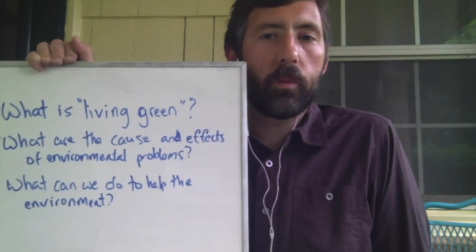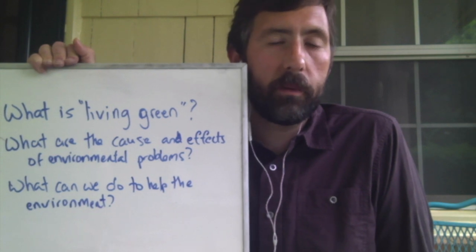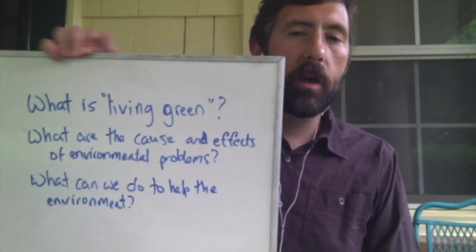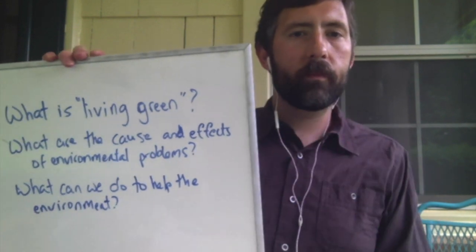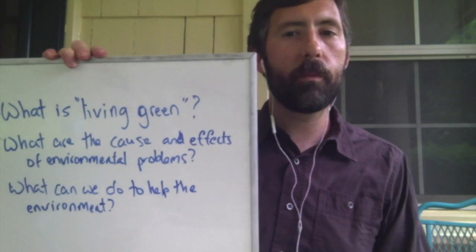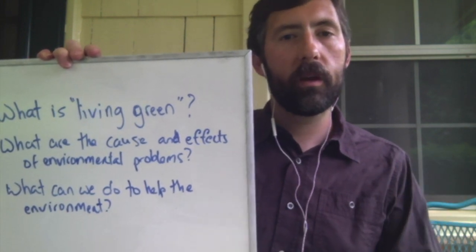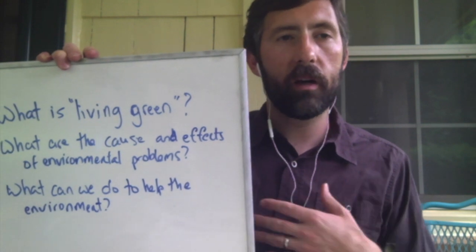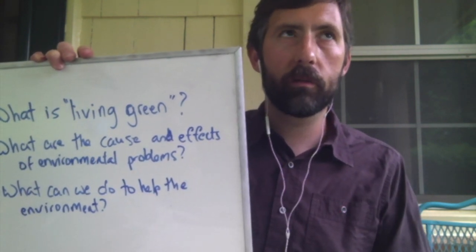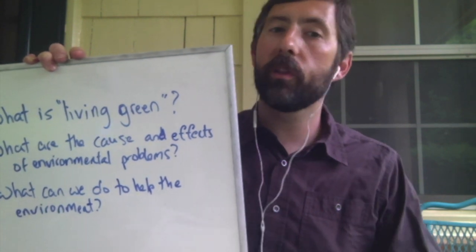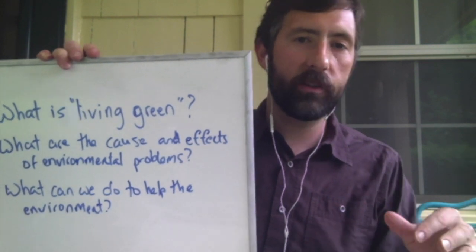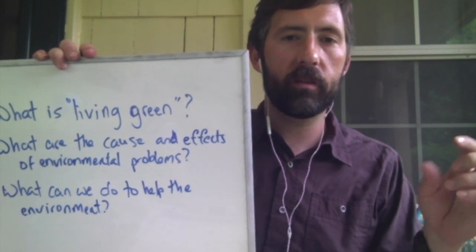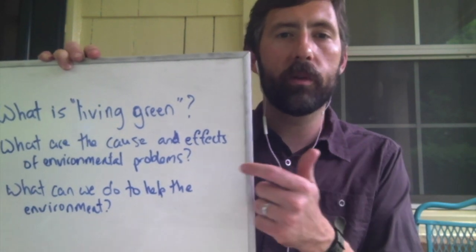Question two: what are the causes and effects of environmental problems? First, what are some environmental problems? For some of you, your apartment may be near a creek. If you go down to the creek, there is lots of trash. In Dallas, if you go to White Rock Lake or any creek, what do you always see? Trash in natural water — in rivers, streams, creeks, and lakes — is a problem. That's an example of an environmental problem.